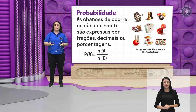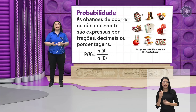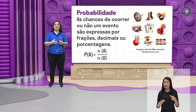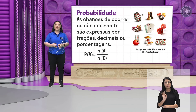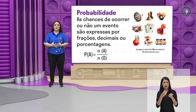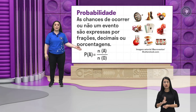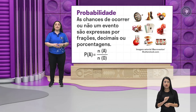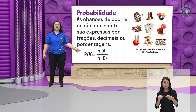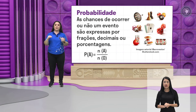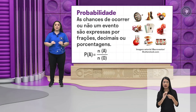Essas chances, essas possibilidades, são expressas em frações. A gente sempre vai ter um resultado em fração, que também podemos transformar em porcentagem, o que fica mais fácil de visualizar e entender o resultado. A gente vai usar essa fórmula: a probabilidade de um evento A acontecer vai ser dada pelo número de elementos do evento sobre o número de elementos do espaço amostral.